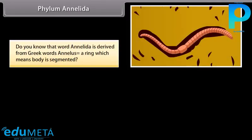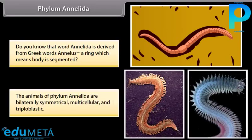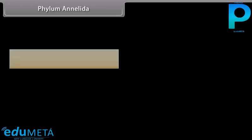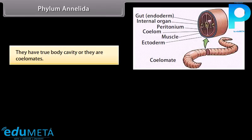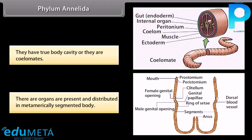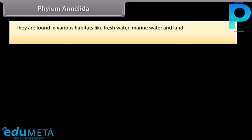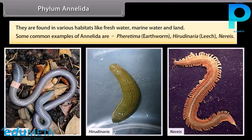Phylum Annelida: the word Annelida is derived from Greek word anilis, meaning ring, which means the body is segmented. The animals of Phylum Annelida are bilaterally symmetrical, multicellular, and triploblastic. They have a true body cavity, so they are coelomates. Organs are present and distributed in a metamerically segmented body. They are found in various habitats like freshwater, marine water, and land. Common examples are Pheretima (earthworm), Hirudinaria (leech), and Nereis.